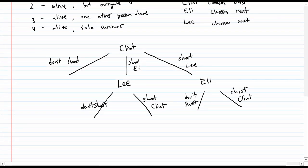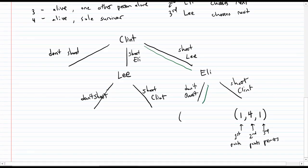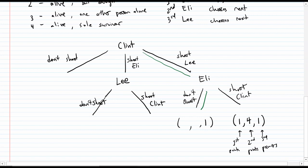What can Lee choose? Lee can choose either to not shoot or could choose to shoot their last person, who is Clint. Similarly, if Clint shoots Lee, then Eli goes next. And Eli can choose not to shoot or to shoot the other person alive. So let's suppose that Clint shoots Lee and Eli shoots Clint. Then what's the payout going to be? Well, Clint is dead, Eli is alive and is actually the sole survivor, and Lee is also dead. So we'll list the points in sequential order. This one will be the first player, the second player, and the third player's points.